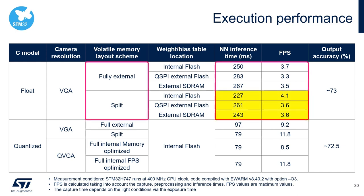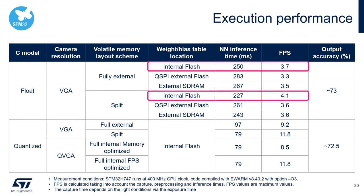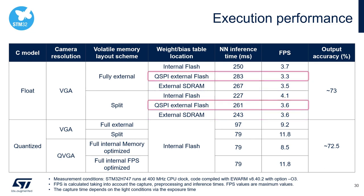As you can see, the split memory scheme has better performance. Regarding the non-volatile memory that contains weights and biases, internal flash gives the best performance compared to external SD RAM, and the QSPI external flash is the slowest among the three.